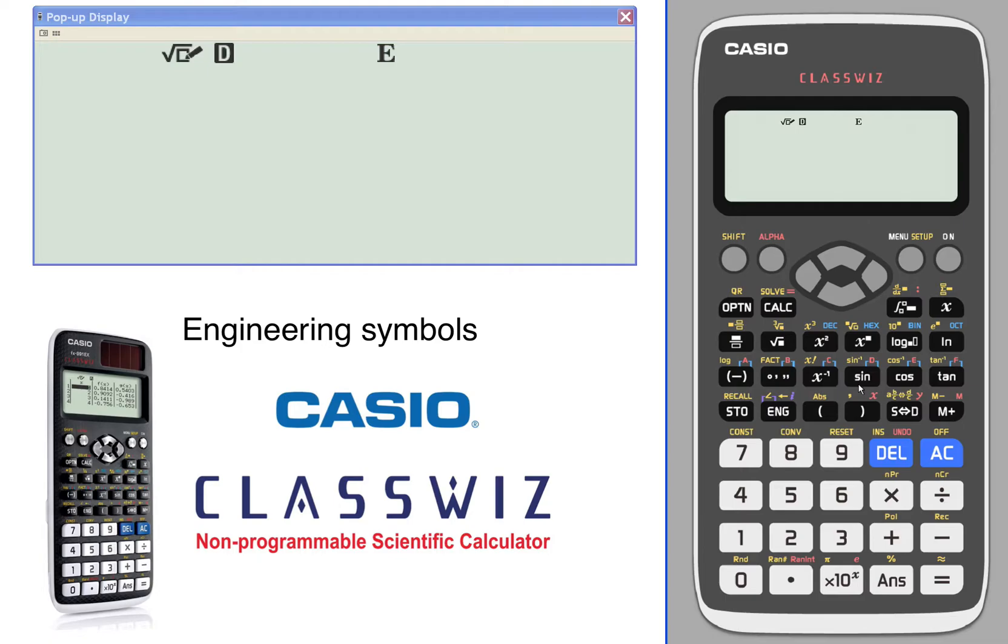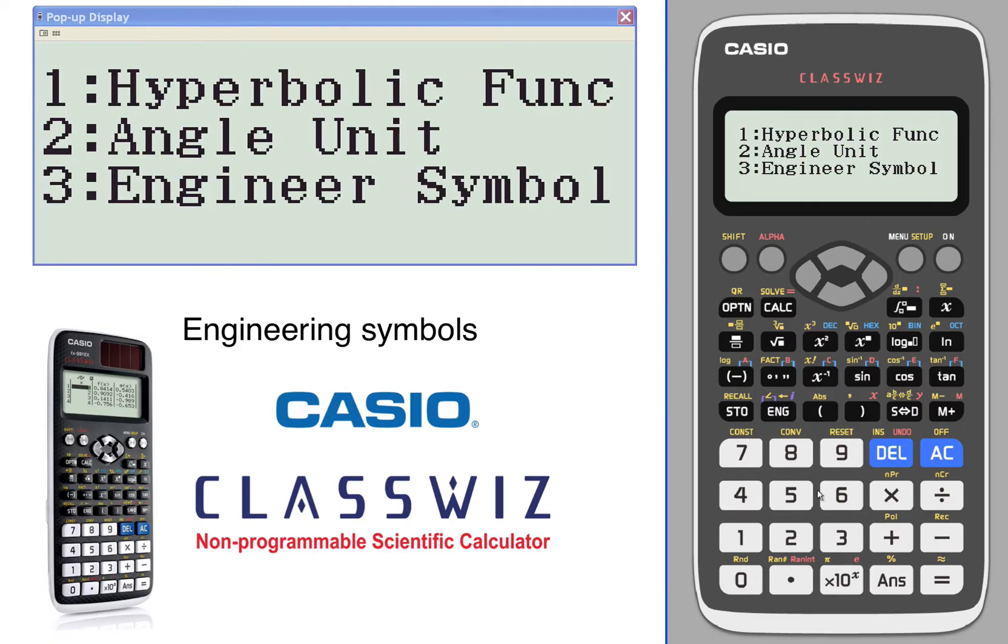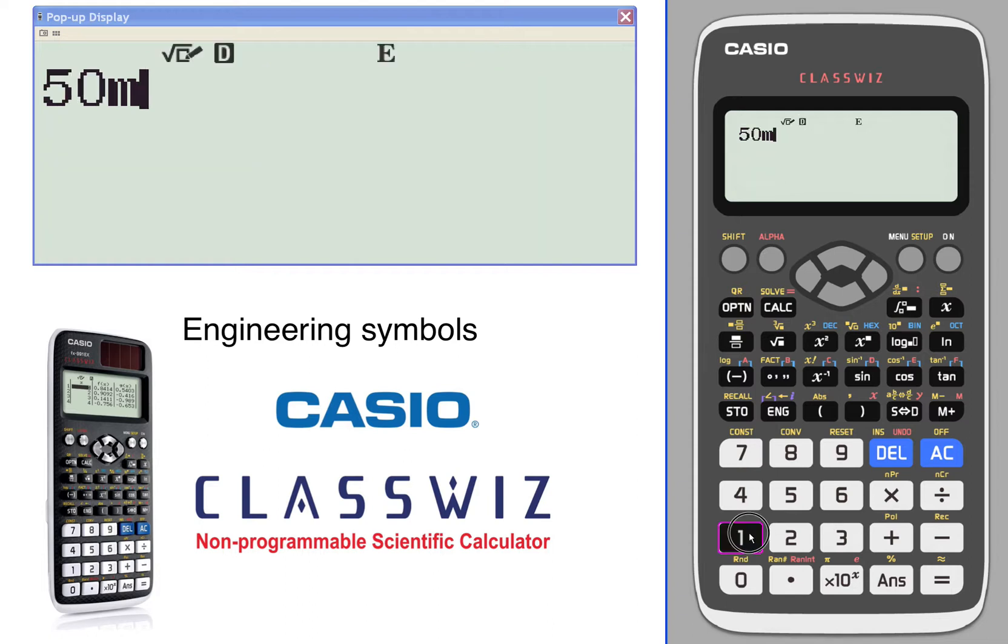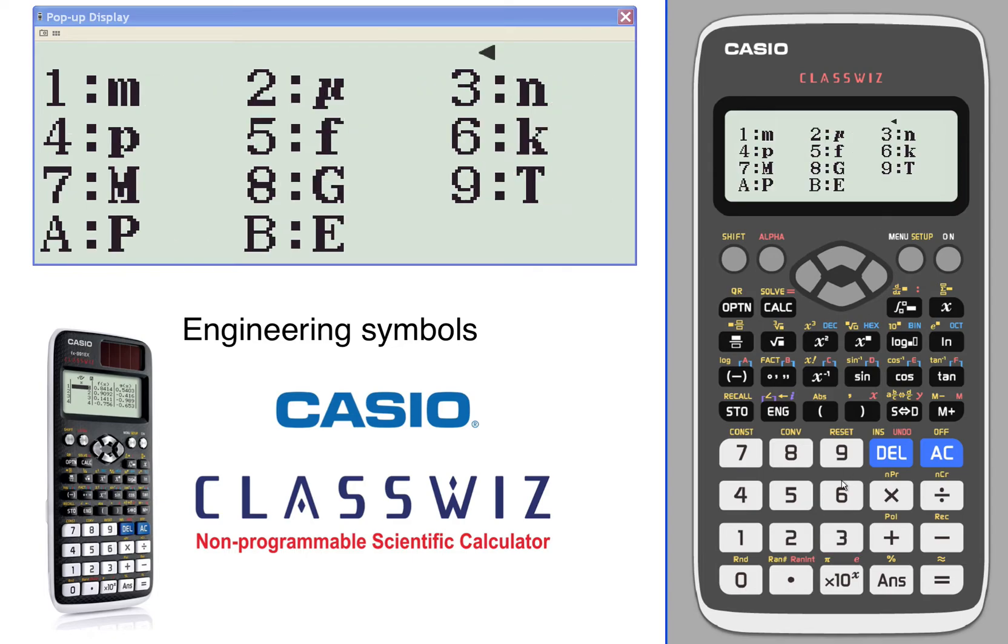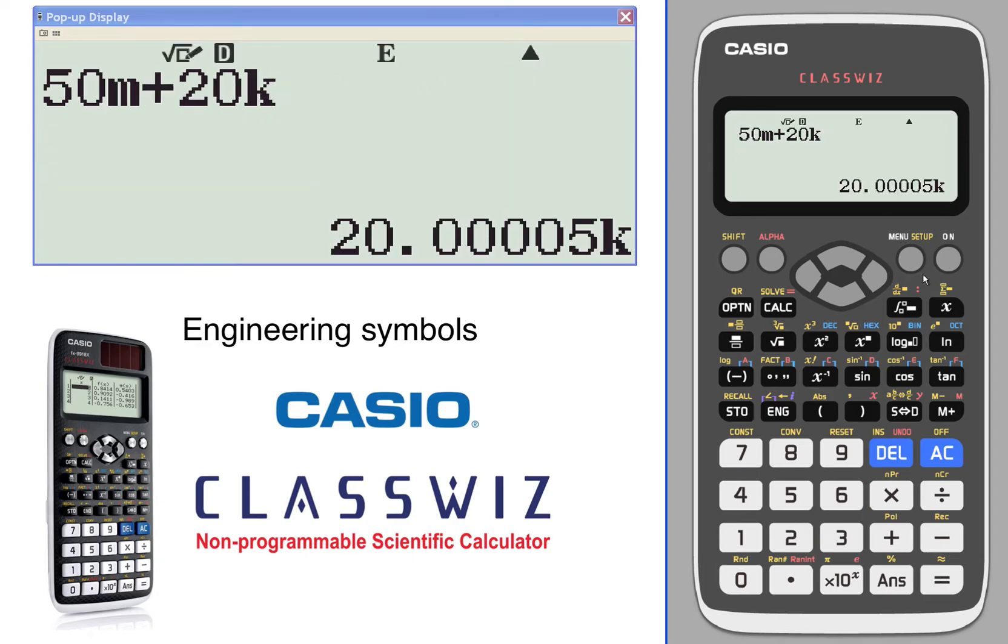So there's our E. Let's say we want to take 50 meters. There's our engineering symbols. Plus 20 kilometers. So we want to be able to calculate with the engineering symbols. Here's number 6.